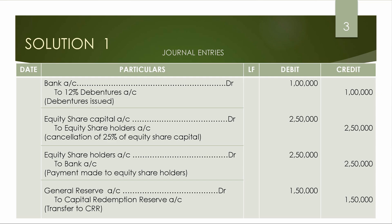The total buyback amount is 2,50,000. Out of this, 1,00,000 is covered by the debenture issue, and the remaining 1,50,000 must come from the capital redemption reserve. For the capital redemption reserve, we use the general reserve. We have 2,00,000 in general reserve, and we transfer 1,50,000 to the capital redemption reserve. The other credit is from the securities premium account.